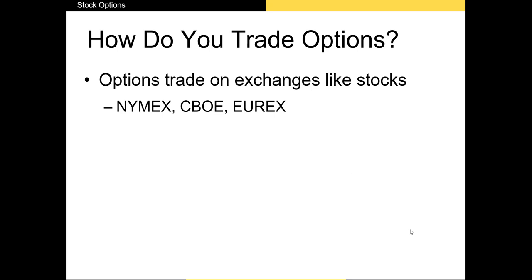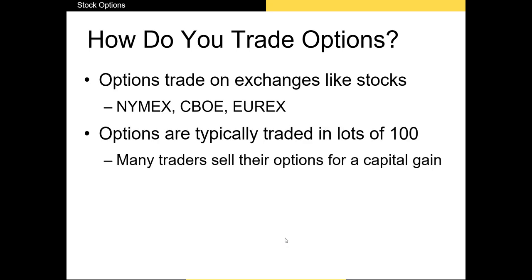Now let's talk about how options trade in the real world. Options are traded very similarly to stocks. Options on certain stocks and other assets are traded on multiple exchanges like the CBOE, the IMAX, and the EUREX. When you buy options, you're typically purchasing options on 100 shares of stock, also known as a round lot. Several brokers like E*TRADE will allow you to buy options on as few as 10 shares. Speculative investors will often sell their option long position when premiums have increased in value and profit from this, rather than exercise their option.